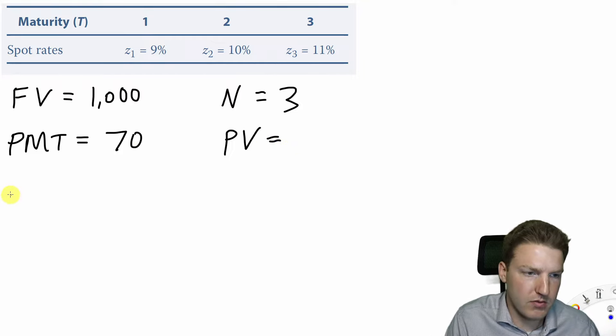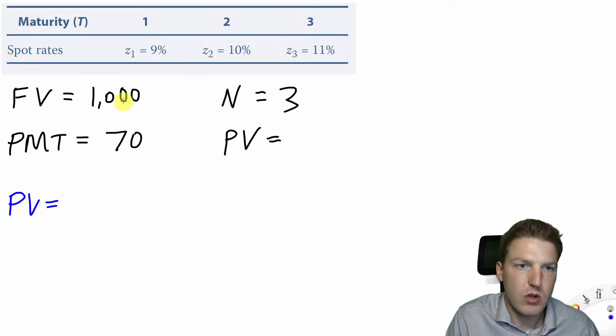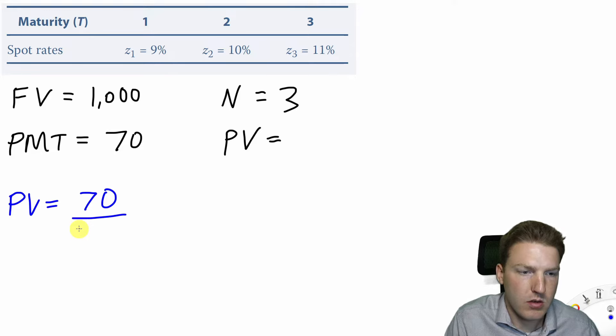We can do that following this formula. Present value is going to be equal to the first year's cash flow, so $70, divided by 1 plus .09, the one-year spot rate,